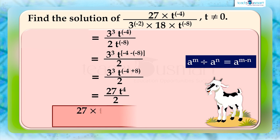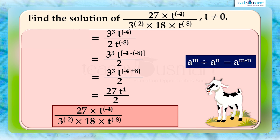That is, 27 multiplied by t raised to minus 4, divided by 3 raised to minus 2 multiplied by 18 multiplied by t raised to minus 8, equals 27t raised to 4 divided by 2.